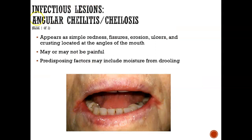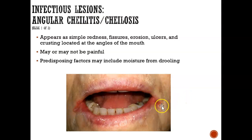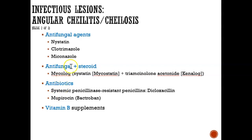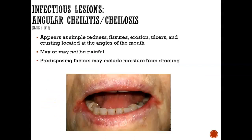Angular cheilitis is inflammation at the angle of the mouth — it's red and can be painful. The typical cause is drooling. To treat it, you might need an antifungal agent, or an antifungal combined with a steroid. If it's really bad, an antibiotic may be needed. Some people say that taking vitamin B supplements can actually help prevent angular cheilitis.